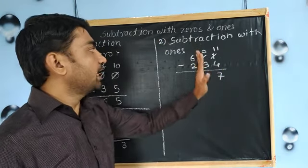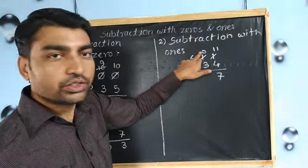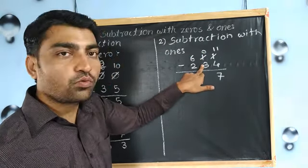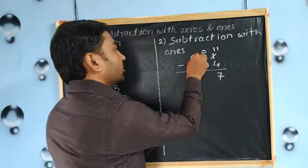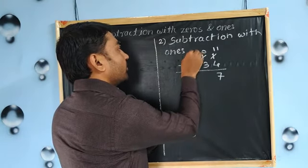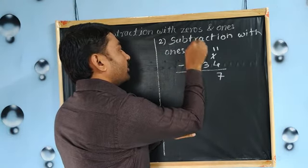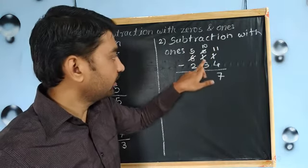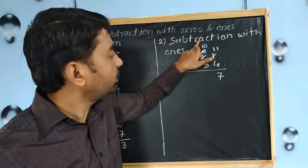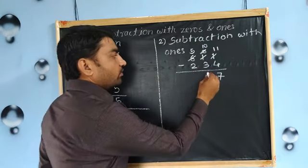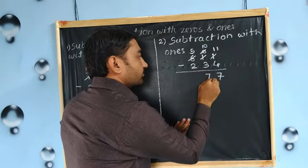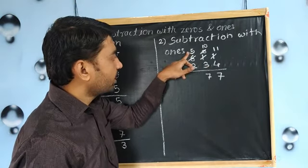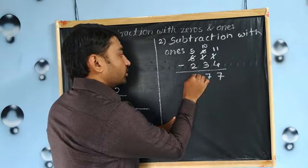Let's come to the tens place. Now there is zero — zero minus three. So here again we need to borrow one from hundreds place. Five will remain there and this zero will become ten. Now we can subtract three from ten: ten minus three equals seven. At hundreds place, five minus two equals three.